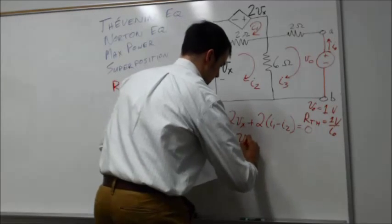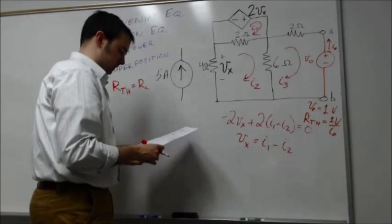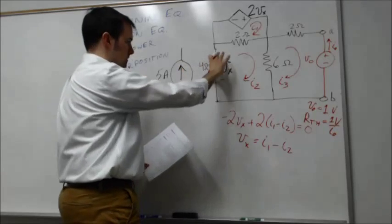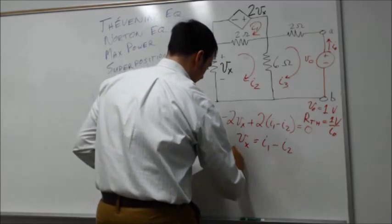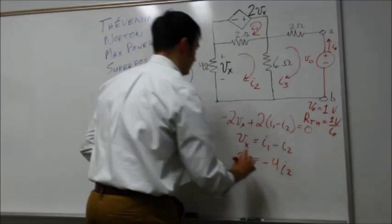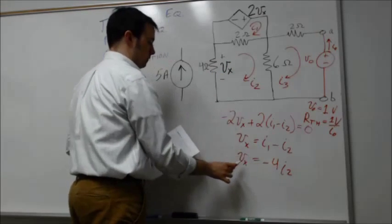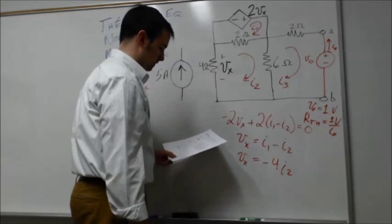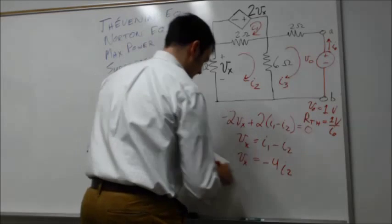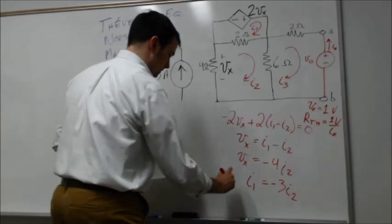Simplifying, we get V_x = I₁ − I₂. We also know that V_x is defined across the four-ohm resistor, giving V_x = −4I₂. Combining these two expressions, we eliminate V_x and arrive at I₁ = −3I₂. That's one of our key equations.